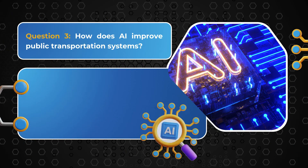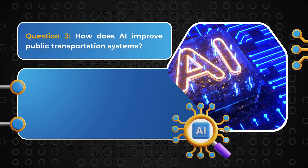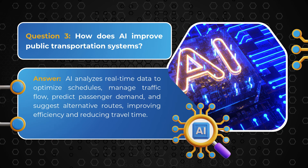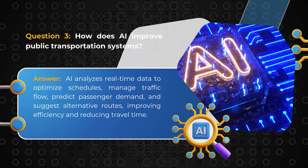Question 3: How does AI improve public transportation systems? Answer: AI analyzes real-time data to optimize schedules, manage traffic flow, predict passenger demand, and suggest alternative routes, improving efficiency and reducing travel time.